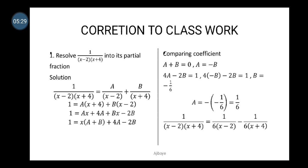Substituting back into the expression, 1 over (x minus 2)(x plus 4) equals (1/6) over (x minus 2) plus (minus 1/6) over (x plus 4), which gives us 1 over 6(x minus 2) minus 1 over 6(x plus 4).